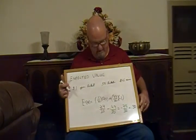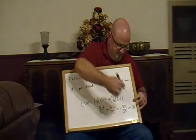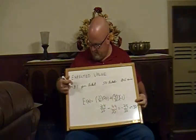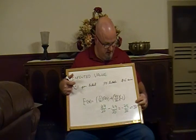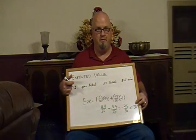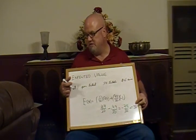So your one dollar ticket is worth a negative 50 cents. What does that mean? That means if you played this game a whole bunch of times, you would lose, on average, 50 cents per play. So that's what it would average out to, 50 cents per play.